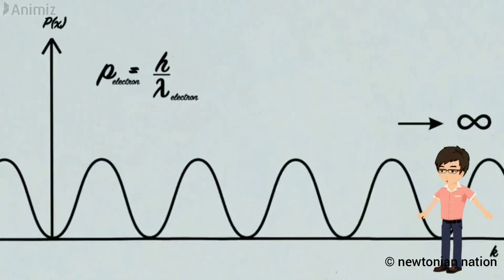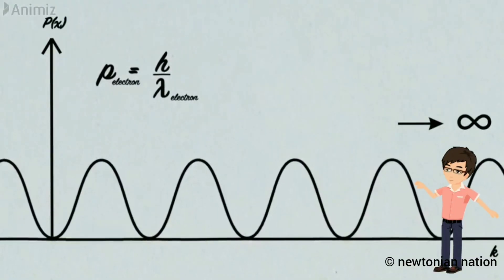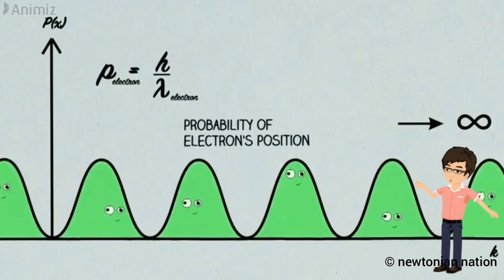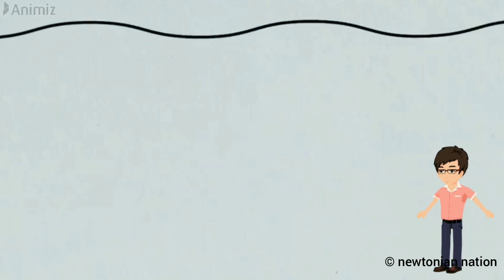We represent the electron's wavelength by an infinite long sine wave. The area under the curve shows the probability of an electron present there. So, we have no idea of where it will be.